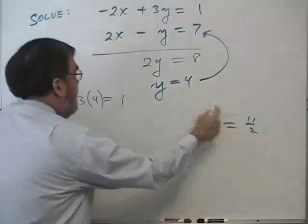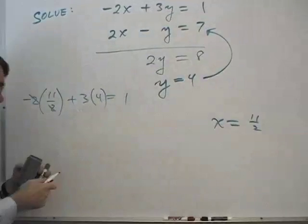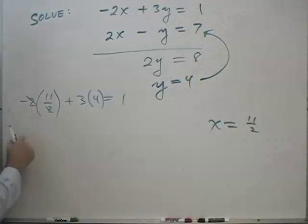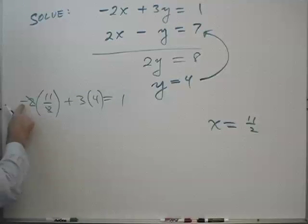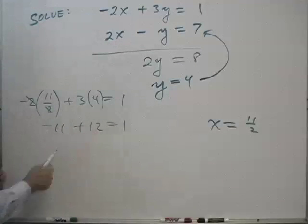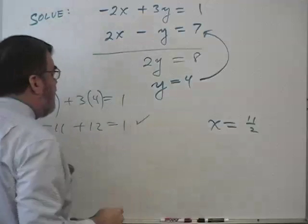I'm replacing both x and y with these numbers, so I need to put the 4 there. The 2's cancel because that's the numerator and denominator. So I have negative 11 plus 12 equals 1. And you can see that's true. So that checks.